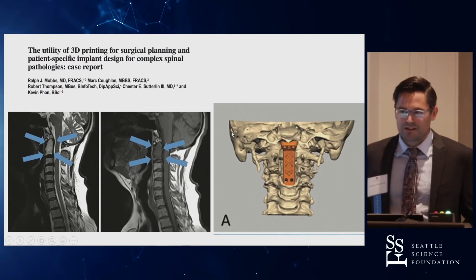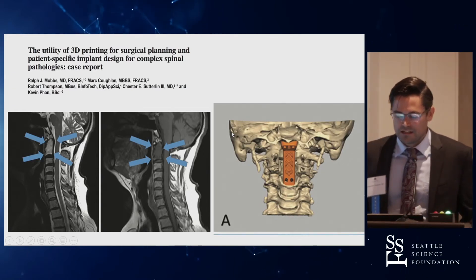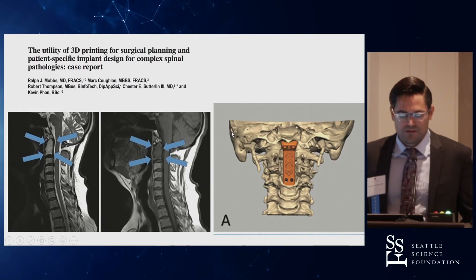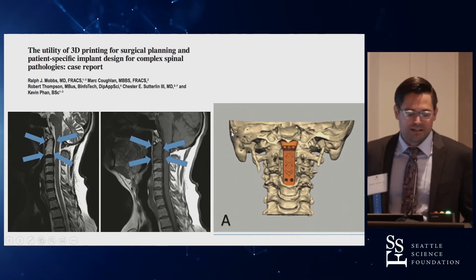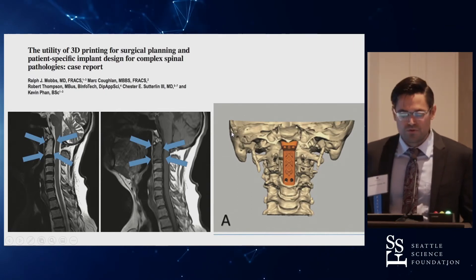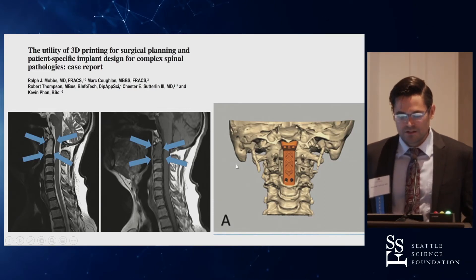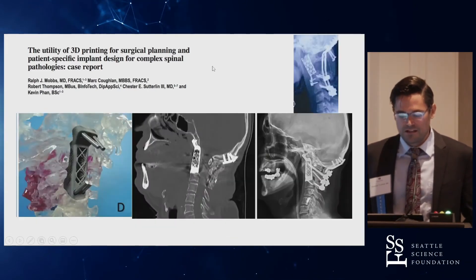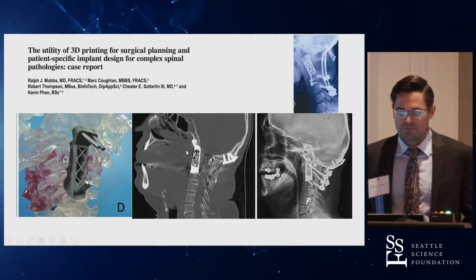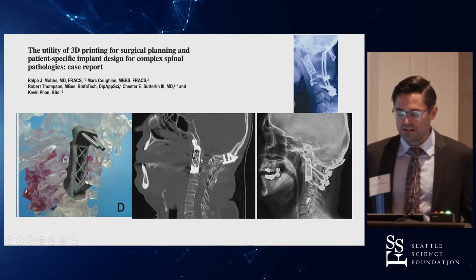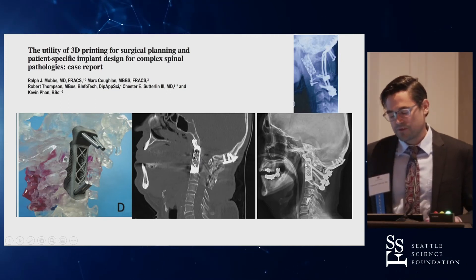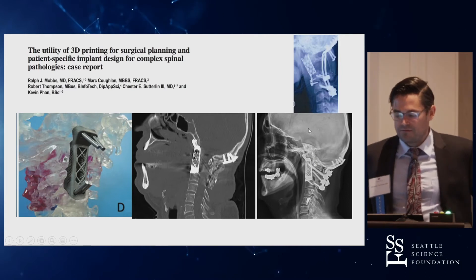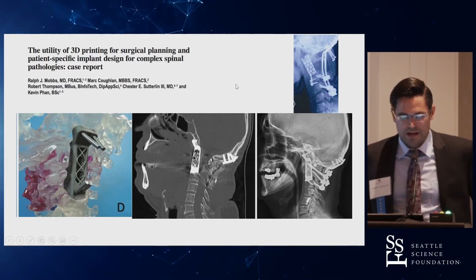The idea behind a custom implant and 3D printing is pretty intuitive. Sometimes we have anatomy that's just difficult to reconstruct with a mesh cage or screws alone. Creating a custom implant allows for something that fits exactly into your planned defect, and a final implant that looks much better than what we had in the past.